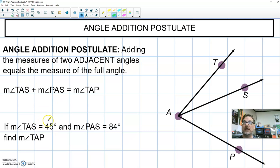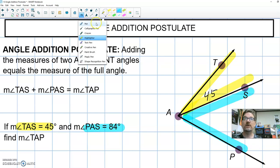So we are told angle TAS is 45, TAS is 45. This is angle TAS. It is 45 degrees. And PAS, PAS is 84 degrees. PAS right here. This guy is 84 degrees.